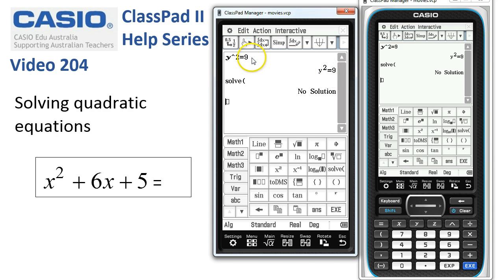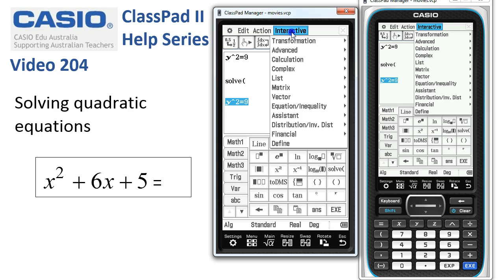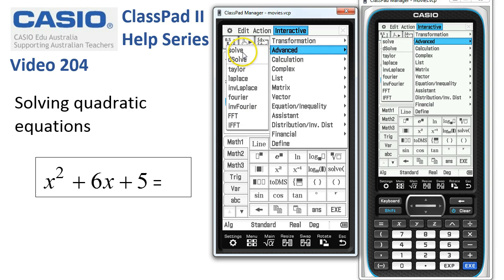This means we're going to try a slightly different solution. So I'm going to copy our equation, take it to a new line, and we'll use the interactive solve. Here we go. We select the equation we want to solve. Tap on Interactive, Advanced, Solve.